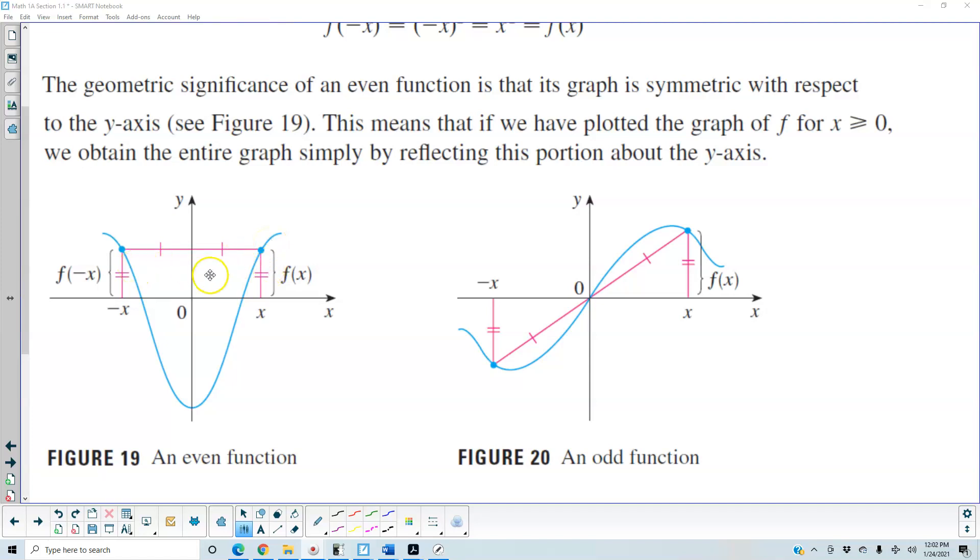If you folded this page with the y-axis in the middle, it would be symmetric. This means that if we plotted the graph of f for x ≥ 0, we'd obtain the entire graph simply by reflecting this portion about the y-axis.